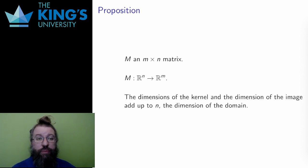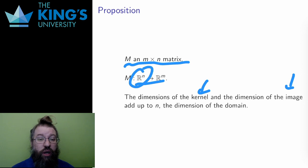So, here is a proposition. Let M be an m by n matrix. It represents a transformation from R^n to R^m. I've defined two things this week, the kernel and the image. The kernel is everything that is sent to zero, and the image is all outputs. Both the kernel and the image are subspaces. The kernel is a subspace of the domain, R^n, and the image is a subspace of the target, R^m. Since they are both subspaces, both have dimensions. Here is the claim. The dimension of the kernel and the dimension of the image add up to n, the dimension of the domain.